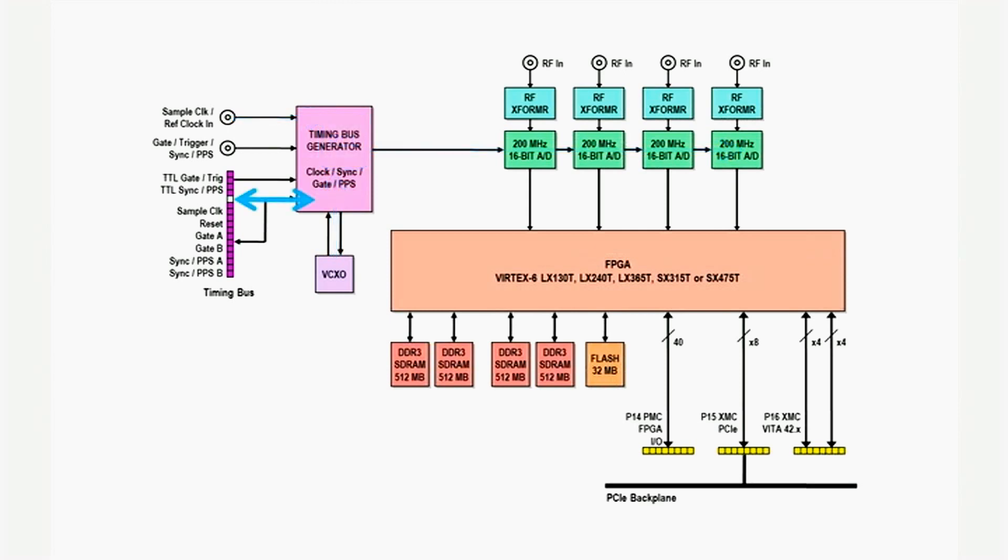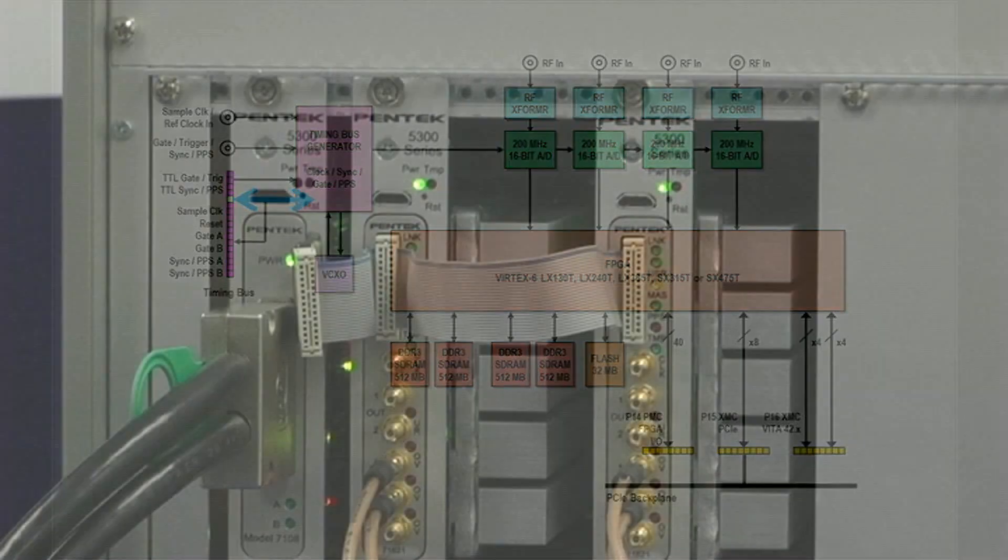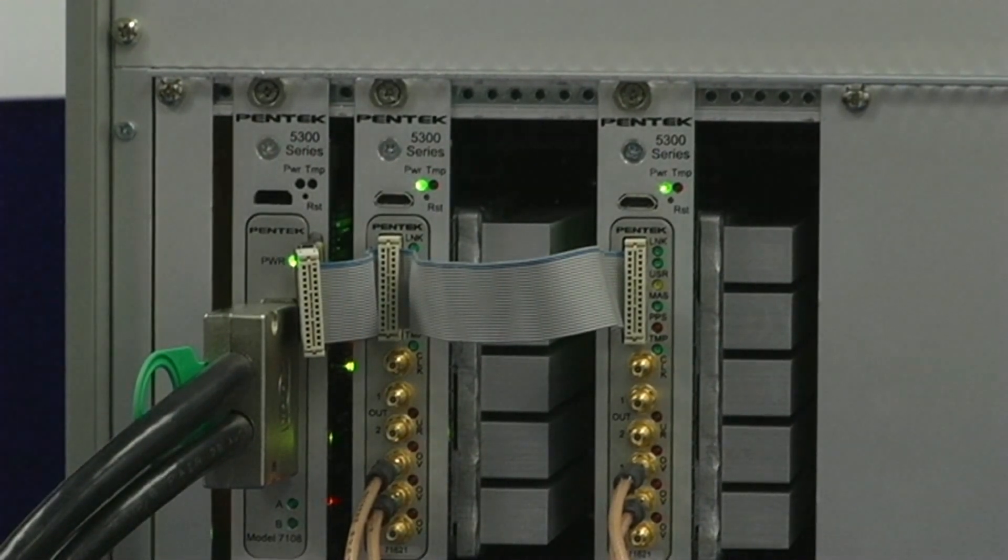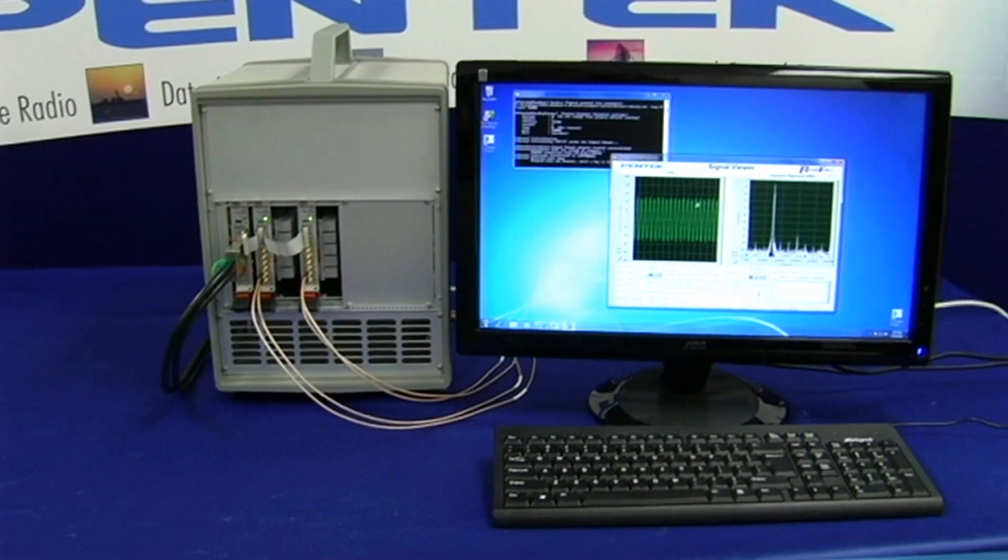In addition, all boards in the COBOL family provide a front panel timing connector for distributing timing signals across multiple boards. A ribbon cable is used to distribute clock, gate, trigger, PPS, and sync signals, making large multi-board systems easy to build.